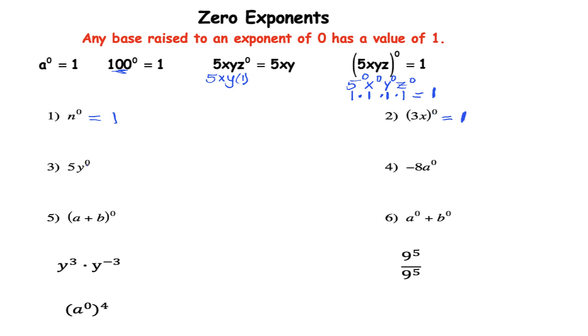Here I have 5y to the zero so got to be very careful here. Look to see who's raised to the zero power. It is the y so that has a value of 1 and then when that multiplies the 5 your answer is 5 times 1 is 5.